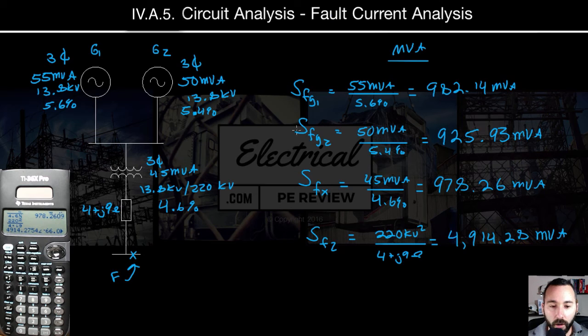All right, now that we've got all of our power contributions from each element, let's take a look at the diagram and see how they're going to add up. So if the fault's down here, we know that these two generators are in parallel.